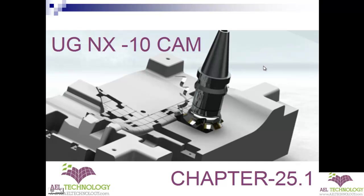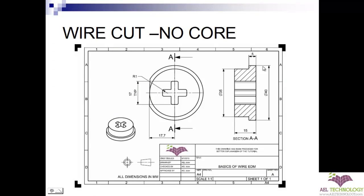Hello, we are in the new session of UG NX CAM and we are in chapter 25.1. In this chapter we are going to deal with wire EDM no-core. This is the component I have chosen for explaining wire cut no-core. It is actually a die piece with a flush shape opening, 15mm thick, diameter of 40mm with a step here and 5mm shoulder — this is the profile which we are going to cut in wire EDM with no-core.